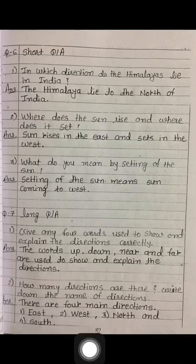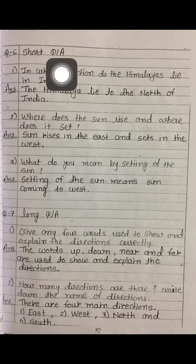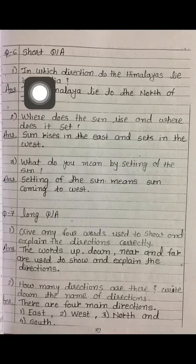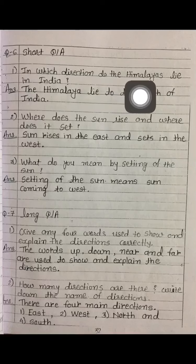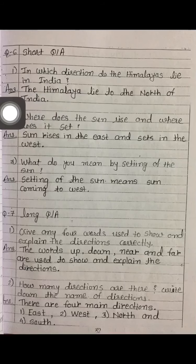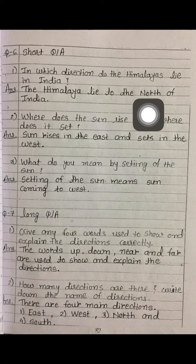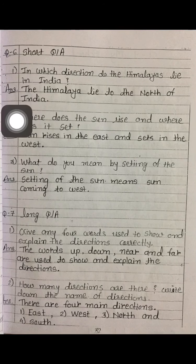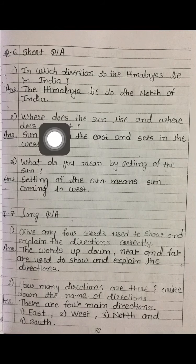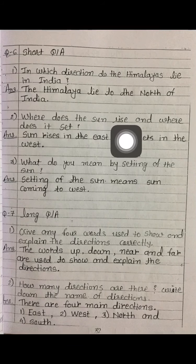Now see page number 32, short question answer. First question: in which direction do the Himalayas lie in India? Looking at the map of India, the Himalayas are to the north. The answer is: the Himalayas lie to the north of India.